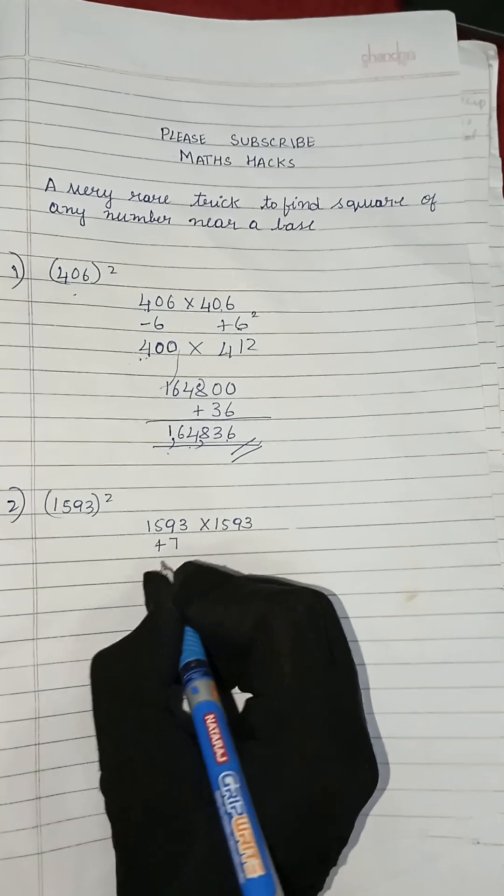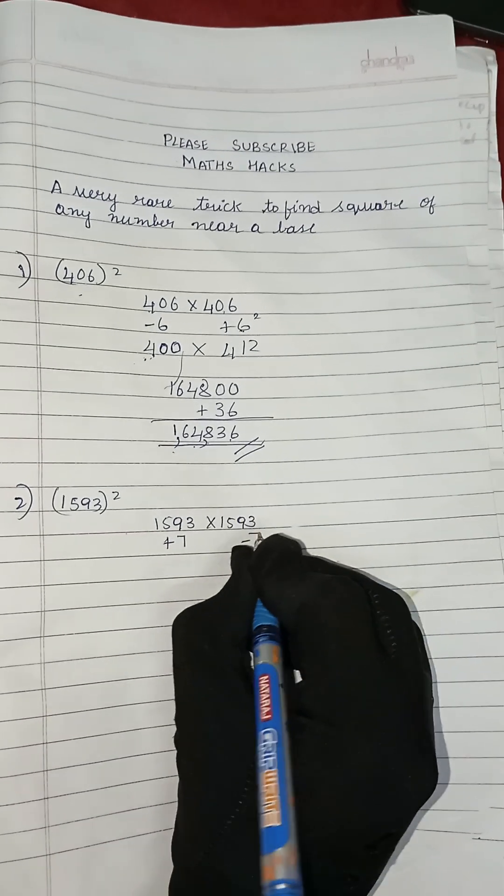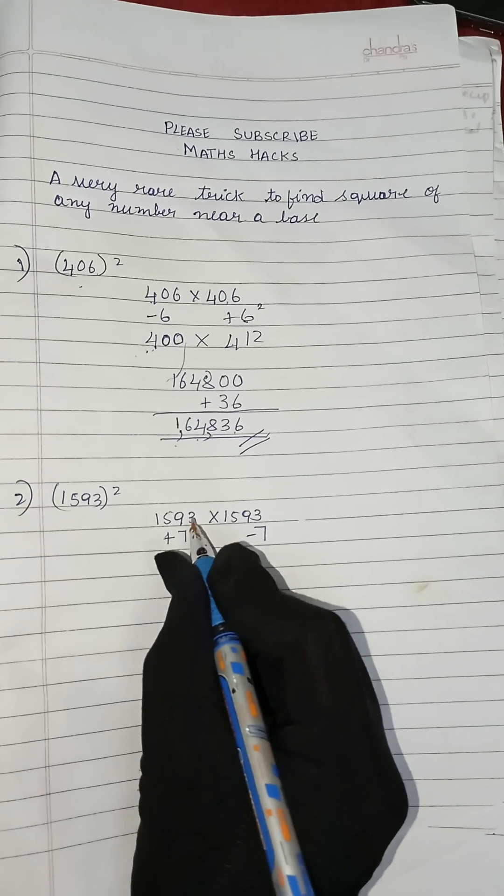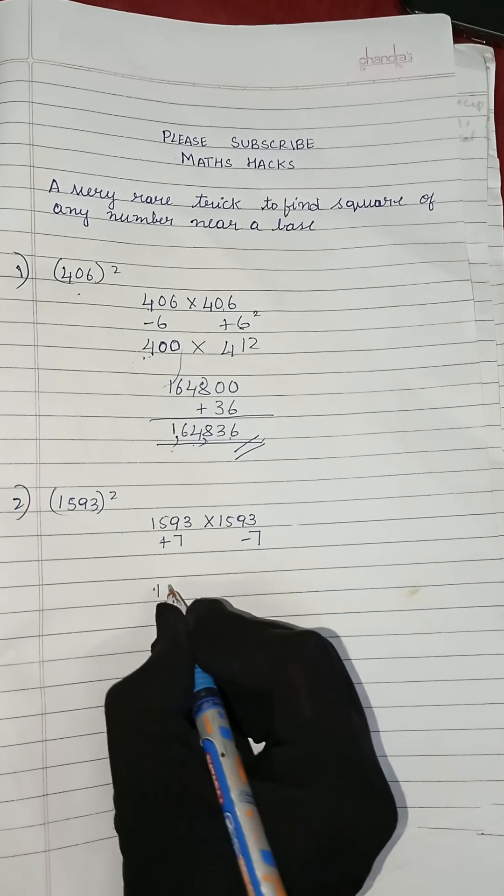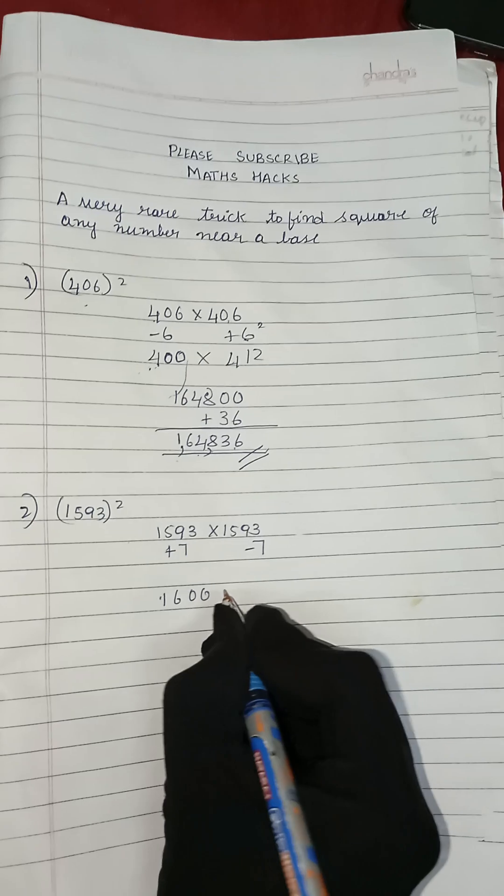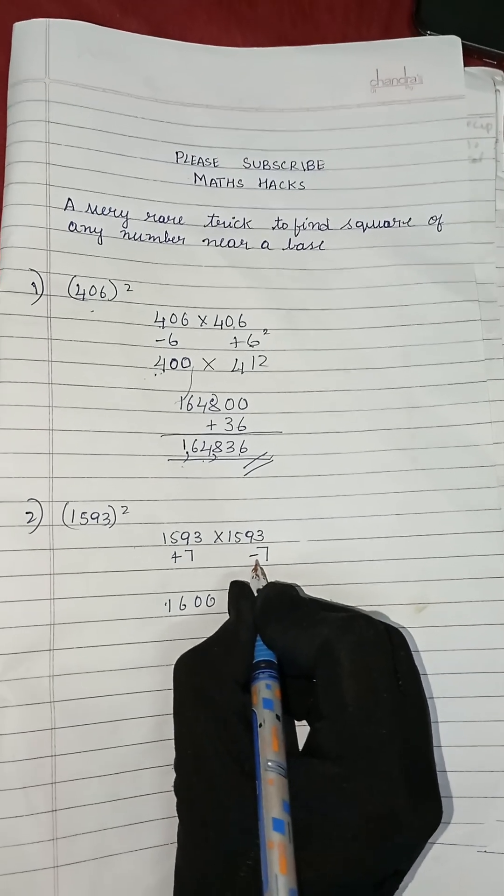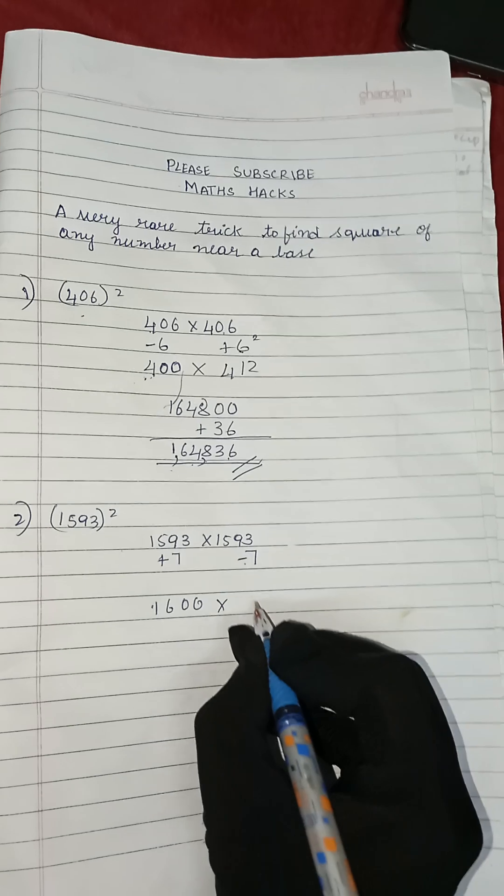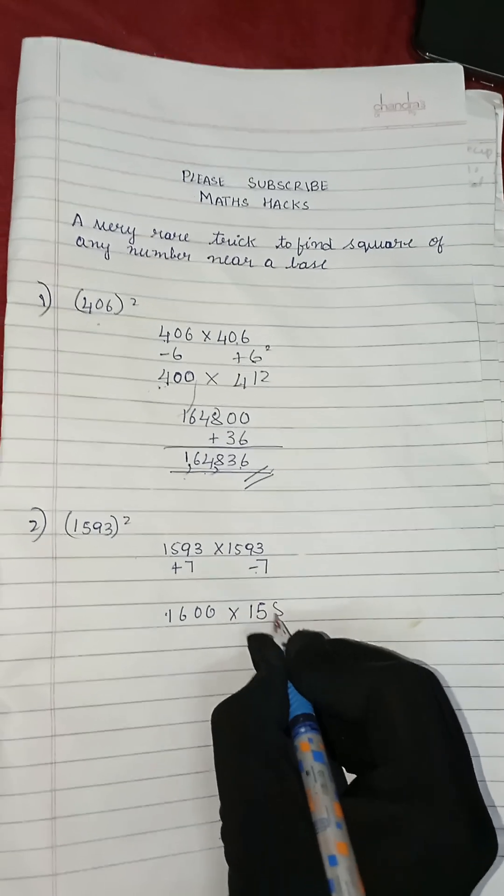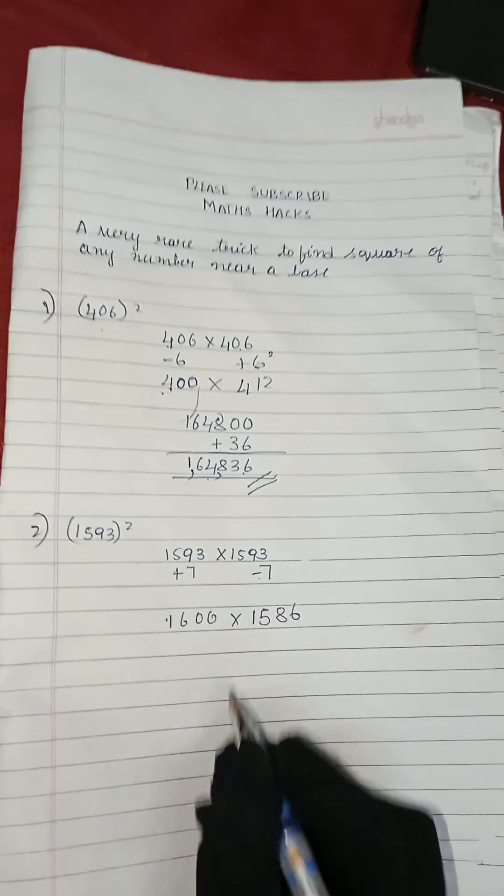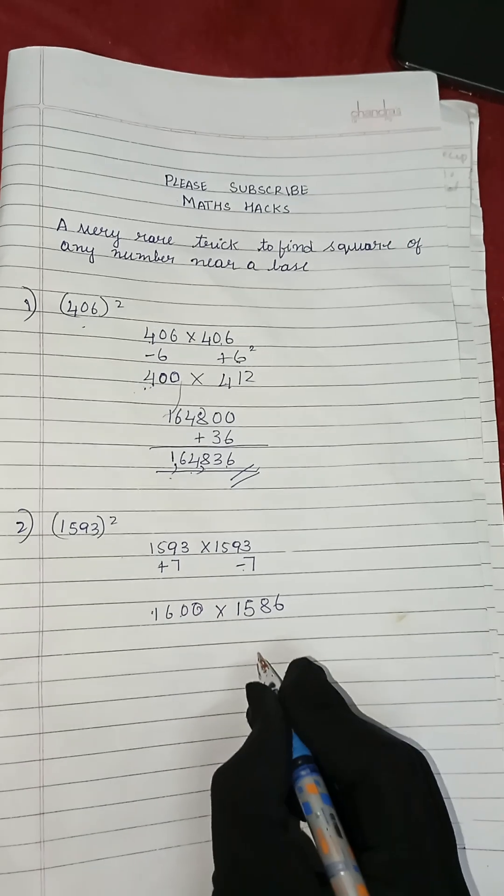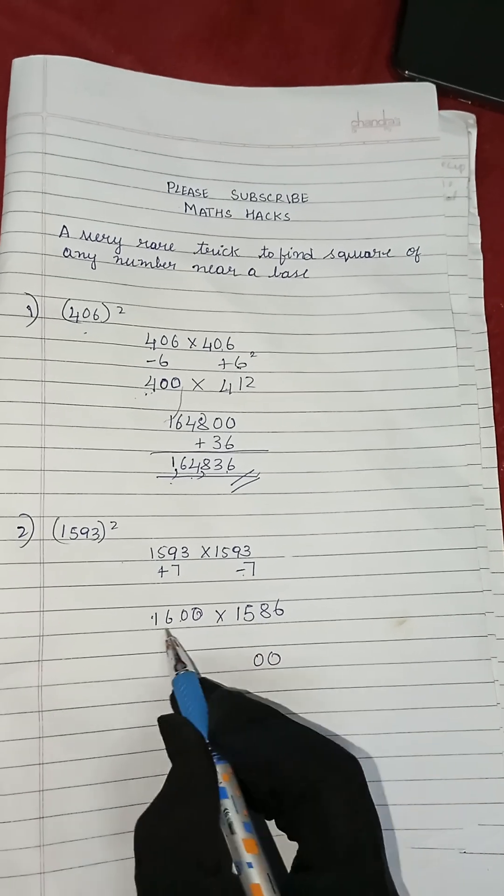How much we will add to 1593 to make this 1600? Plus 7. If here it is plus 7, we will put minus 7 here. Now 1593 plus 7 gives you 1600 into 1593 minus 7 gives you 1586. We will do the multiplication here. We got two zeros, so we will put the two zeros in here.